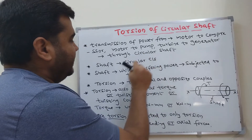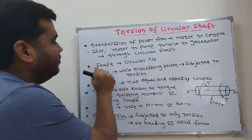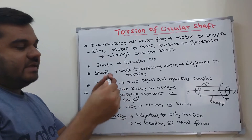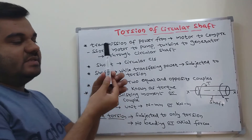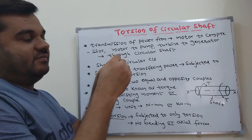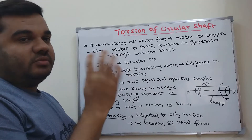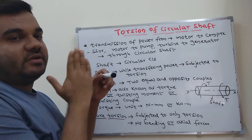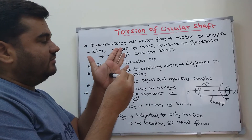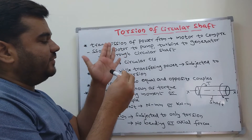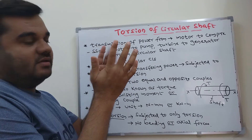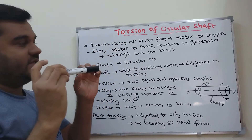The second point: the shaft is circular in cross-section. It can be solid or hollow — both may be considered — but it will always be circular in cross-section. So, when transferring power from motor to compressor, this circular shaft is very important.